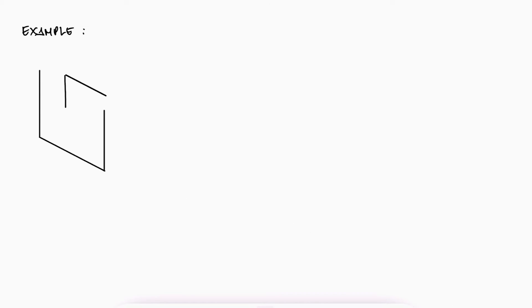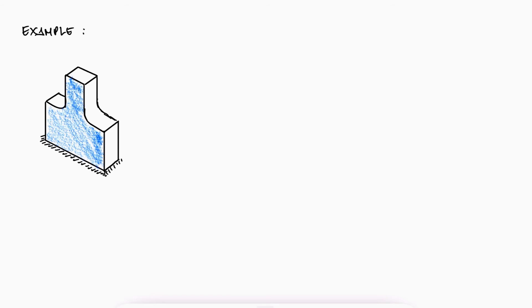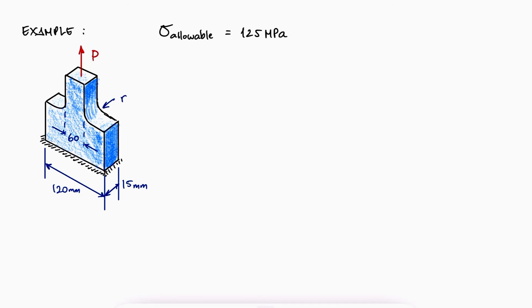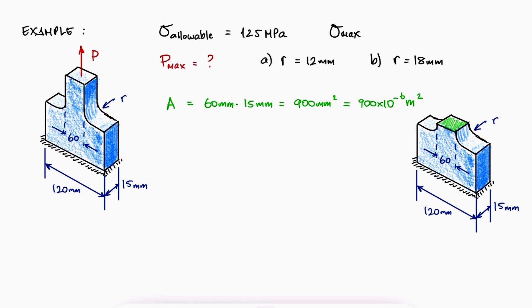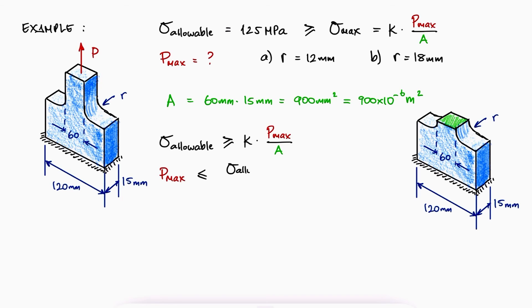Let's look at an example using stress concentration factors and the factor of safety. Knowing that for the plate shown the allowable stress is 125 MPa, what is the maximum value of P when the fillet radius is 12 mm and 18 mm? The cross-section area where the maximum stress will occur is the smallest area perpendicular to the external load P. The maximum load P will be the value for which the maximum stress doesn't exceed the maximum allowable stress. The maximum stress equals K times the nominal or average stress, which for axial loading is P over A. To find the maximum load P, we need both the cross-section area and the stress concentration factor K.